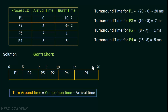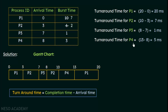For P3: the completion time is 8 ms (its only occurrence in the Gantt chart), and the arrival time is 7 ms, giving a turnaround time of 8 minus 7 = 1 ms. For P4: the completion time is 13 ms and the arrival time is 8 ms, giving a turnaround time of 13 minus 8 = 5 ms.